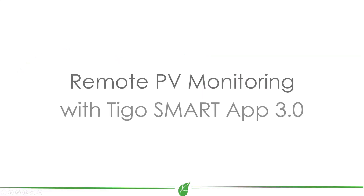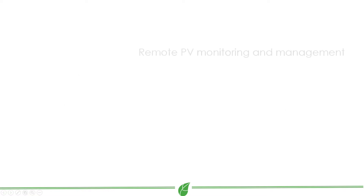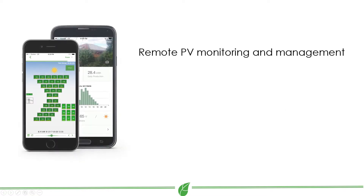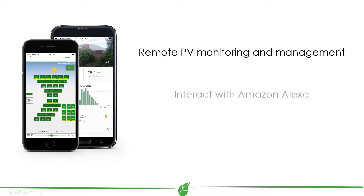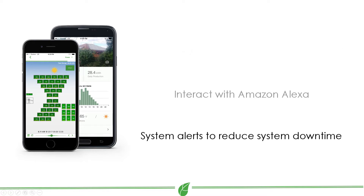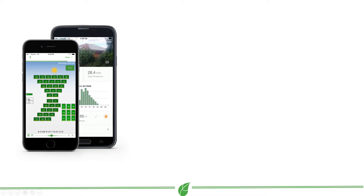The Tygo Smart App 3.0 allows you to remotely view your solar system's production from your mobile device, interact with Amazon Alexa, and receive notifications that include statuses and suggestions for corrective actions where and when needed.